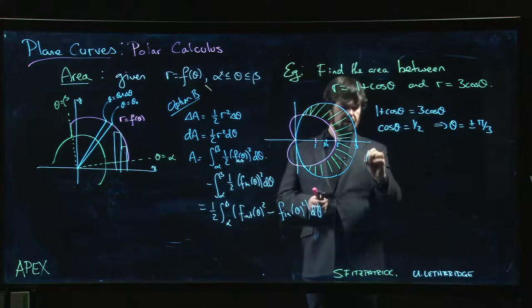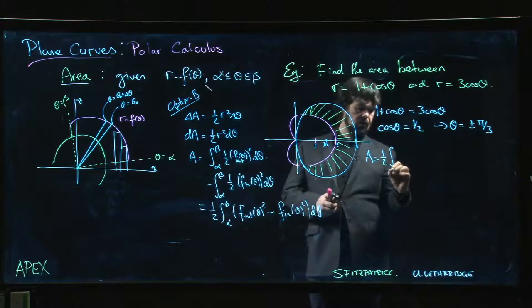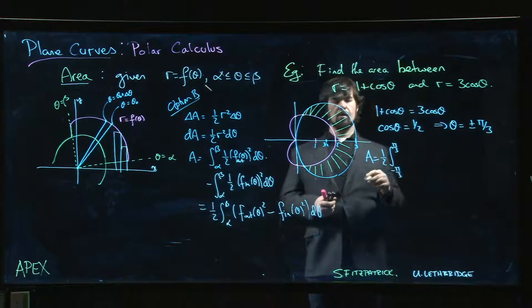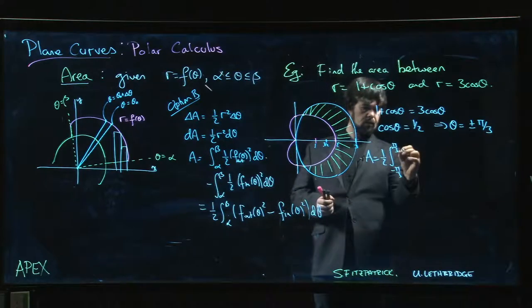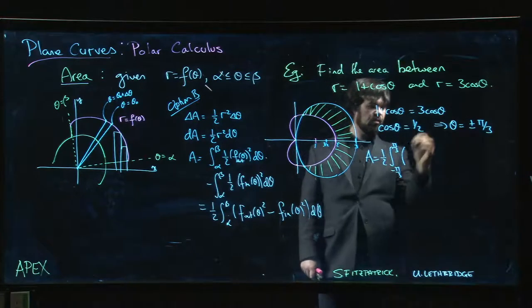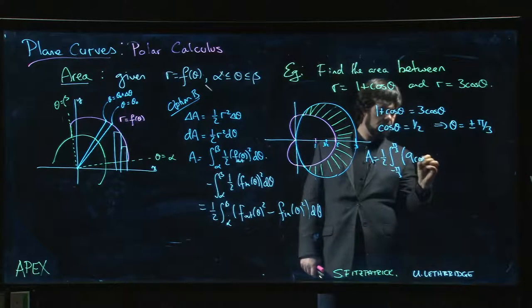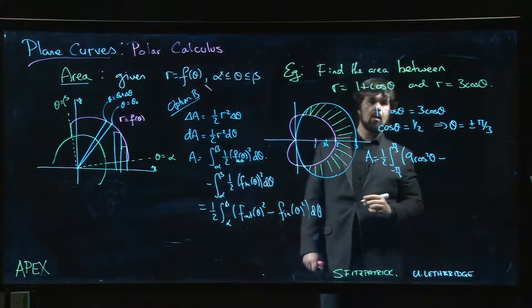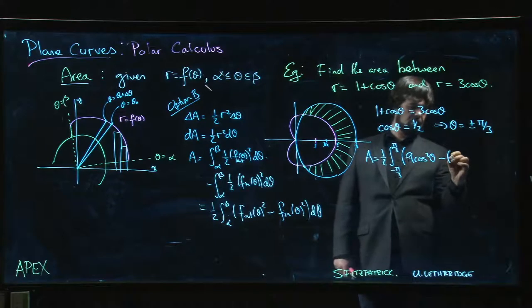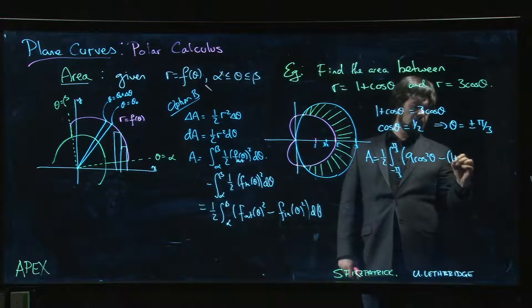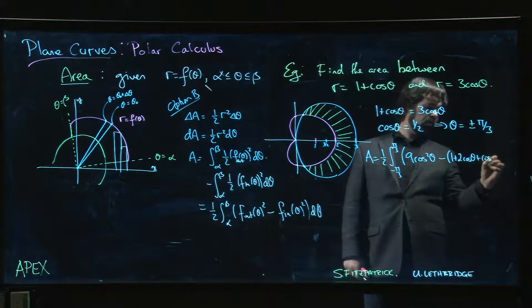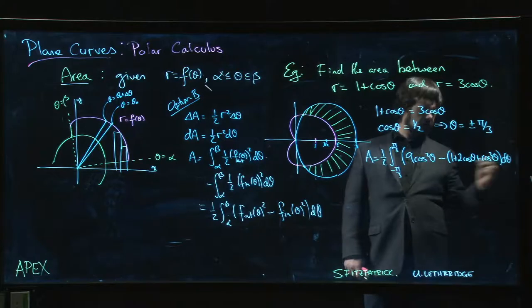So in our case, area looks like one half integral from minus pi over three to pi over three. The outer curve is the circle. Again, that's where the picture comes in handy. We can see that the circle is on the outside. So if we square that, we have nine cos squared theta, and now we've got to subtract off one plus cos theta squared. We already squared that in the last example. That's one plus two cos theta plus cos squared theta d theta.